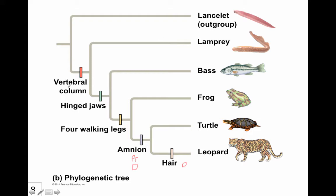The vertebral column is an ancestral trait for the lamprey, bass, frog, turtle, and leopard, but it is a derived trait compared to the Lancelet. You should be able to look at a figure like this and determine which traits are derived or ancestral, and in comparison to which group.